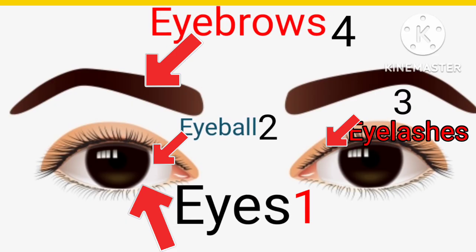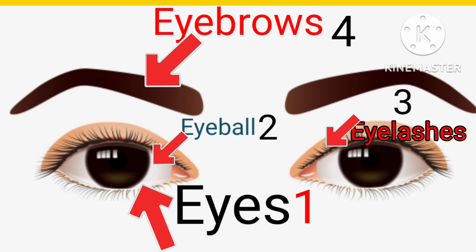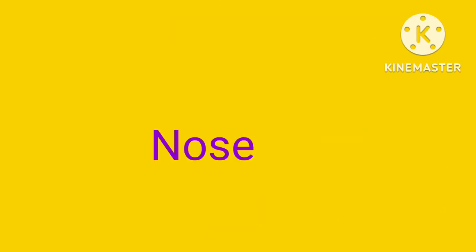Eye parts. Eyes: E-Y-E-S. Number two: Eyeball. E-Y-E-B-A-L-L. Eyeballs. Eyelashes: E-Y-E-L-A-S-H-E-S. Eyelashes. Eyebrows: E-Y-E-B-R-O-W-S. Eyebrows.